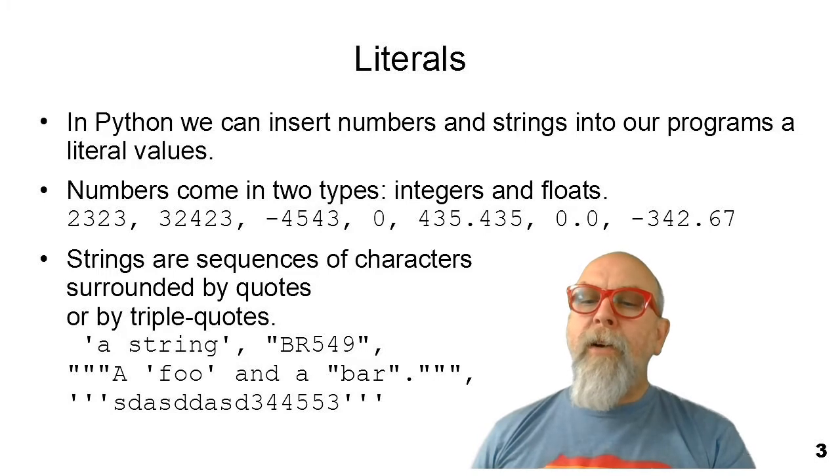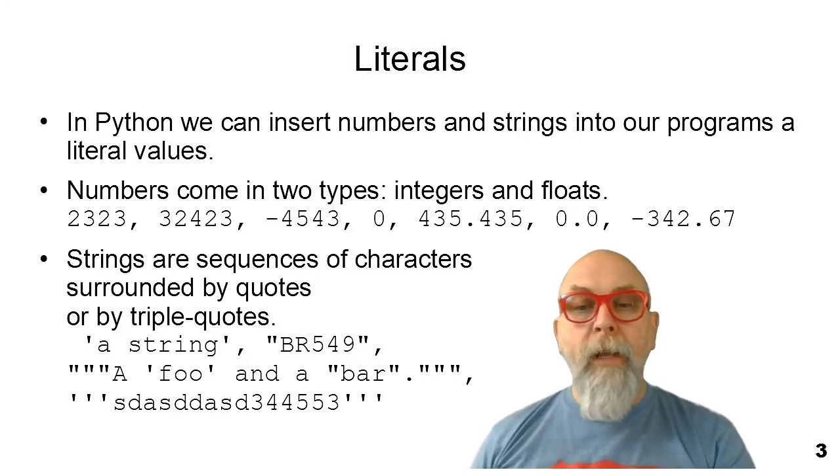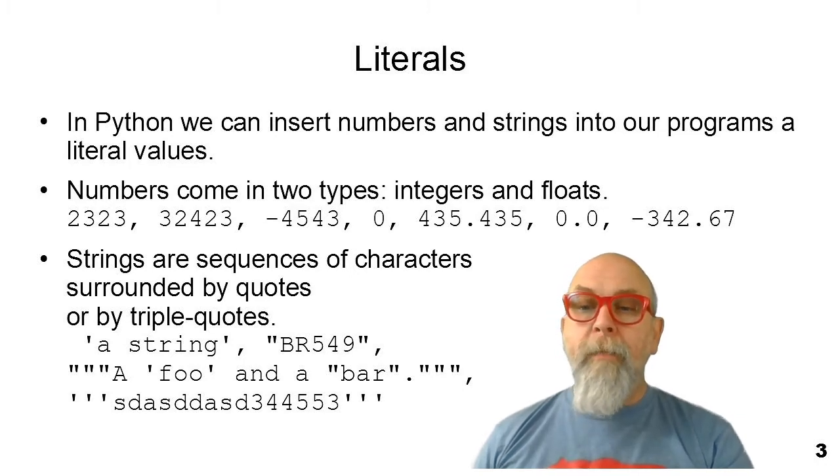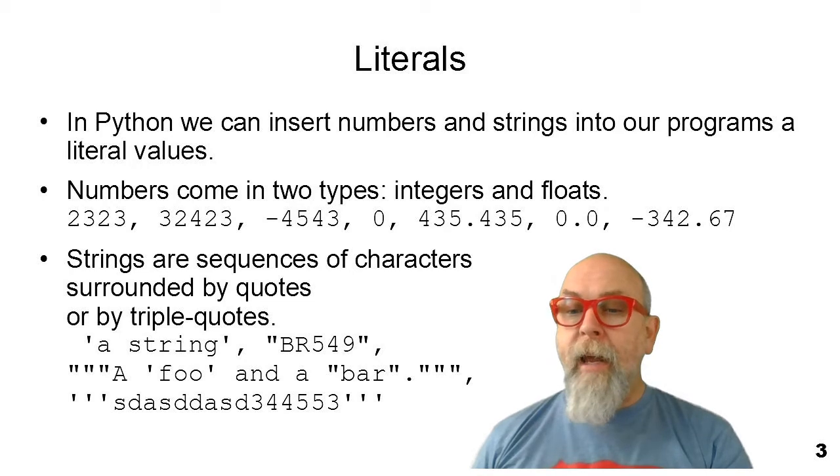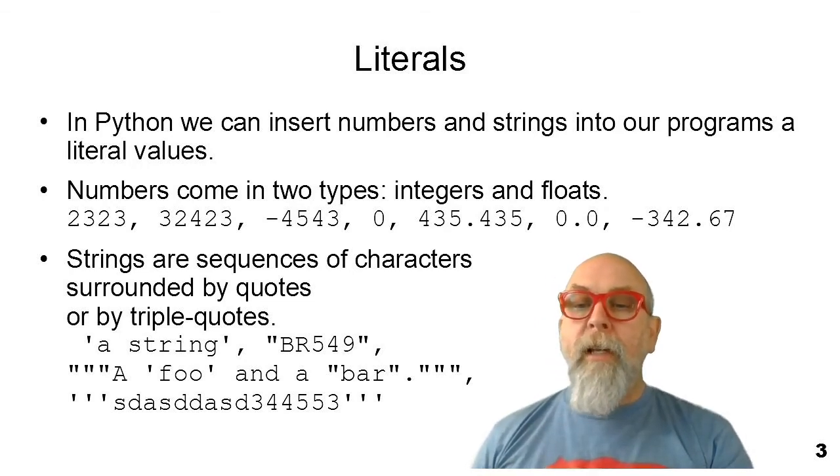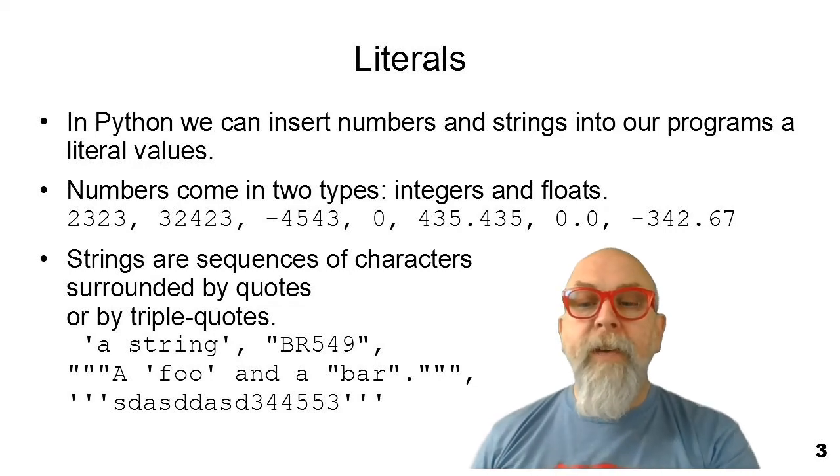First, let's introduce things that we're going to call literal values or literals. In Python, we can put numbers and strings into our programs as literal values. Numbers come in two types, integers, whole numbers, and floating point numbers that contain a decimal point and a decimal fraction beyond the decimal point. Integers and floats can come in both negative and positive, and you can see several examples of integers and floats there in the middle of the slide.